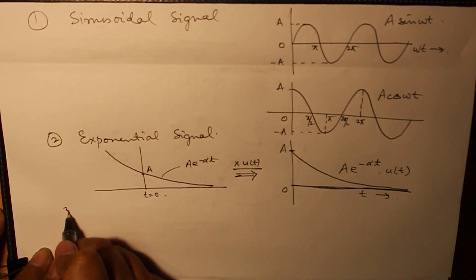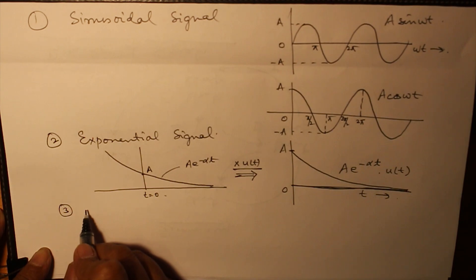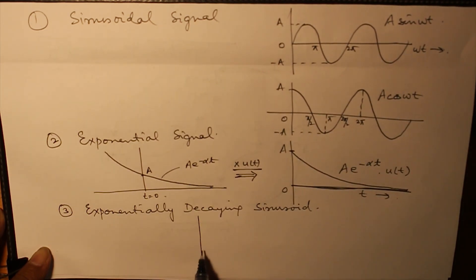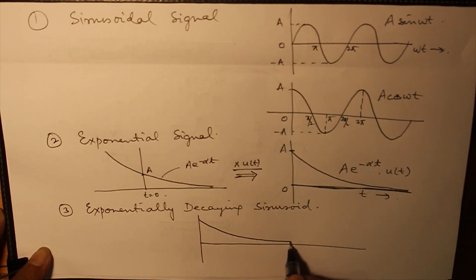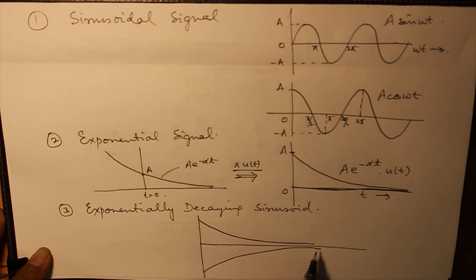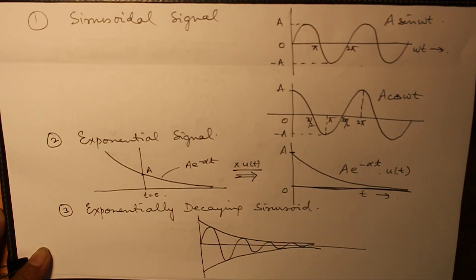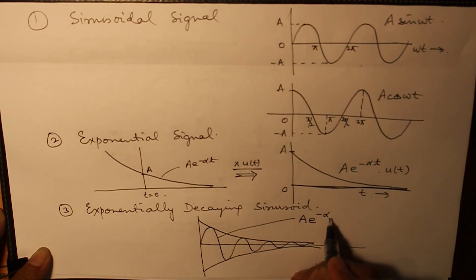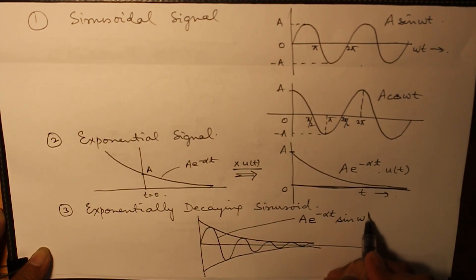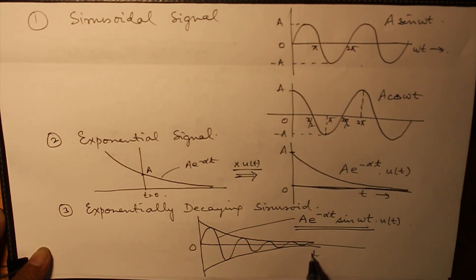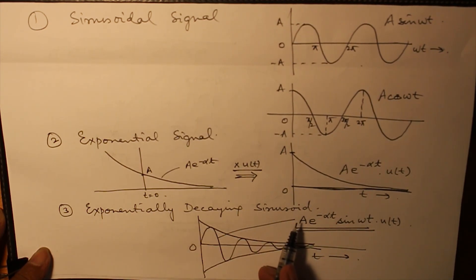Similarly, you can have a combination of sinusoid and exponential, which is known as an exponentially decaying sinusoid: A·e^(-αt)·sin(ωt), obviously multiplied by u(t), such that it is only valid for t greater than 0. This exponentially decaying sinusoid has a lot of use when you have a Laplace transform.